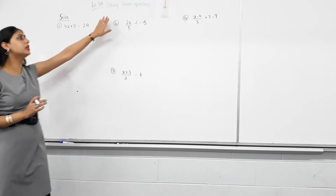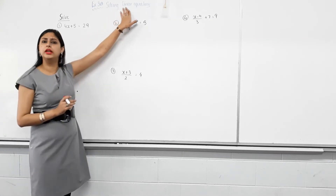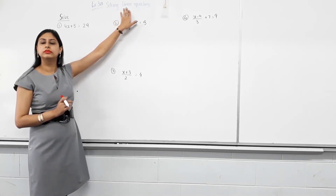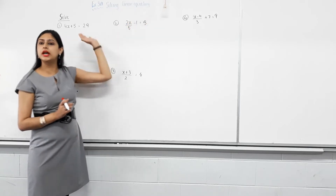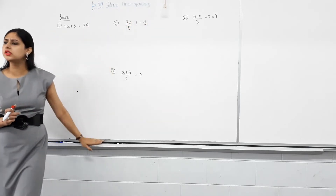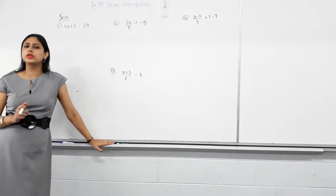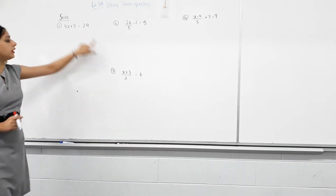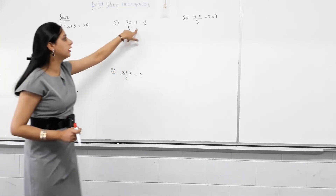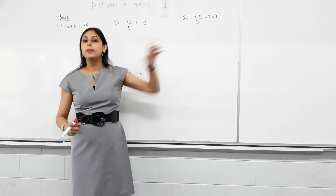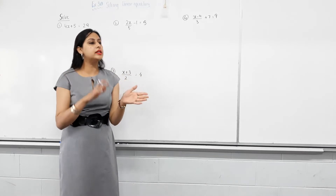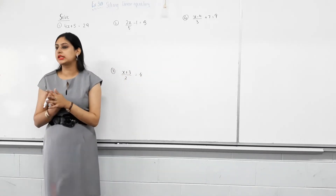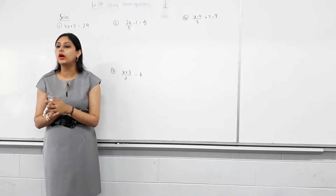Now, what does the word linear mean? Let's talk about equations first. Are these all equations? Yes. What makes them an equation? Equal sign. Do they all have an equal sign? Yes. So they're all equations because one side is equal to the other, and you can find the value of X in this case.